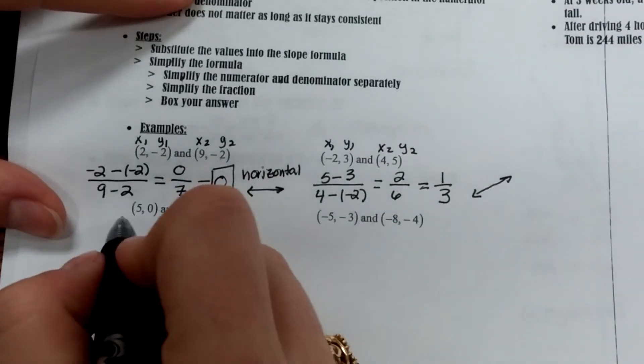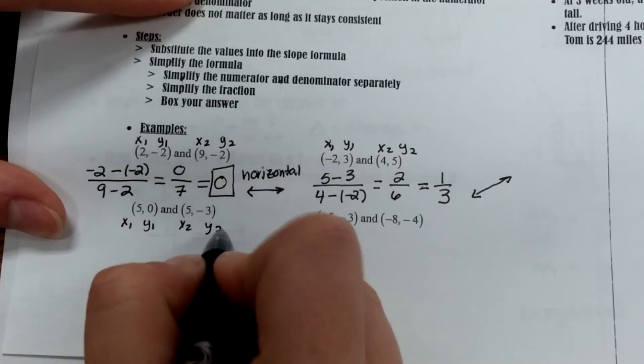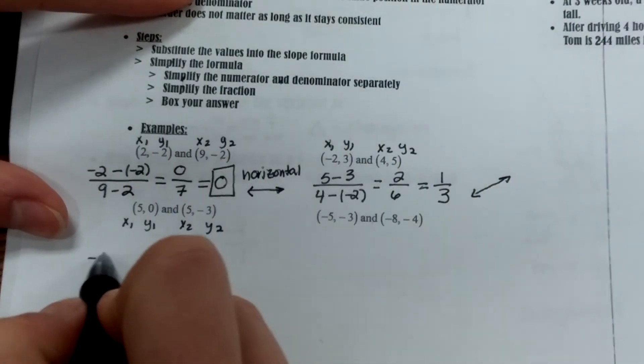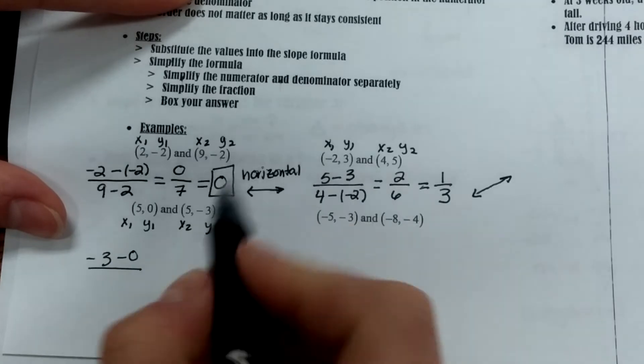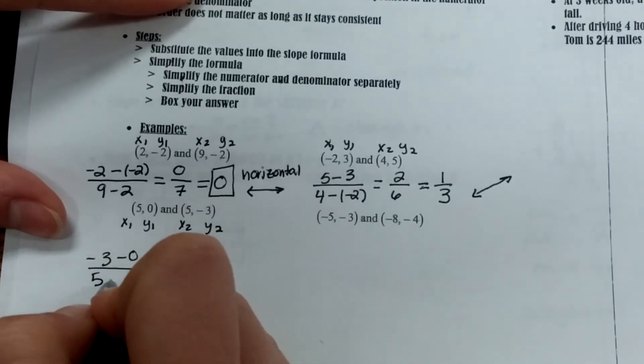Next example, same deal. We use x1 and y1, and then x2 and y2. So y2 is negative 3, minus y1 is 0, over x2 is 5, and y2 is also 5.